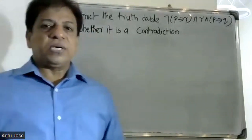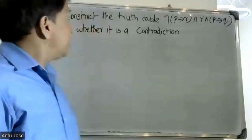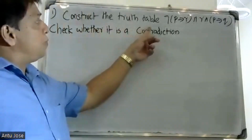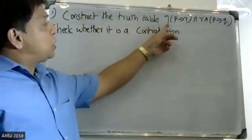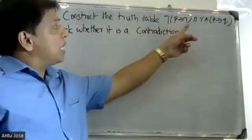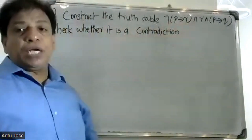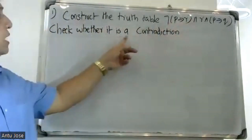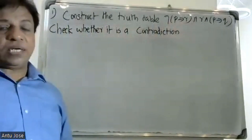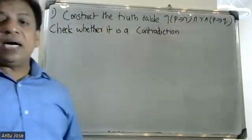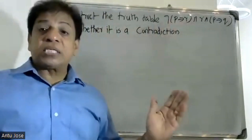Good morning students. Construct the truth table for negation of p conditional r, and p conditional r, and check whether it is a contradiction. In the truth table construction area, this is the contradiction.